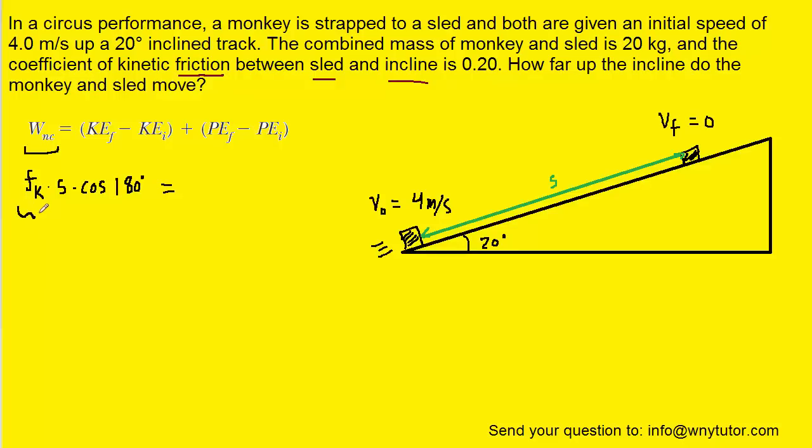We also need to remember that the kinetic frictional force is equal to the coefficient of kinetic friction times the normal force. So we need to make that substitution. We'll still have the multiply by s and also the cosine of 180. We next need to remember that the normal force of an object on a ramp will be mg times the cosine of the angle, which would be the 20 degrees in this case. So we need to replace the normal force with mg cosine of theta.